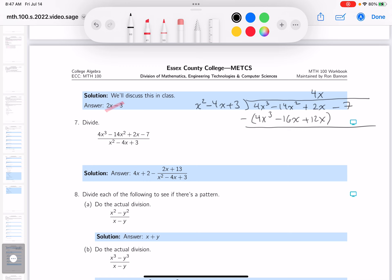Minus 14x squared minus a minus, whoops, sorry about that, that's squared. Minus 14x squared minus a minus 16x squared is going to be 2x squared. 2x minus 12x is going to be minus 10x, and then minus 7.